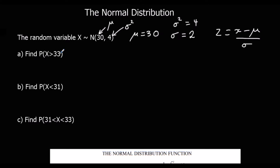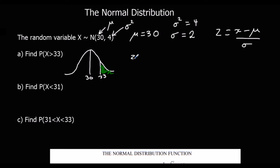For part a, we need to find the probability that x is bigger than 33. Our normal distribution has 30 in the middle, and 33 is up to the right. We want to know the probability of being in the green section above 33. To use the table, we standardize our score: z equals 33 minus the mean of 30, divided by the standard deviation of 2, which gives us 3 over 2, which is 1.5. So we're looking up a standardized score of 1.5.